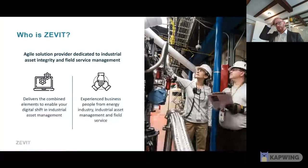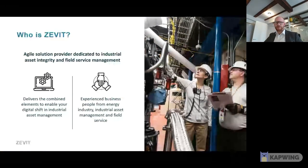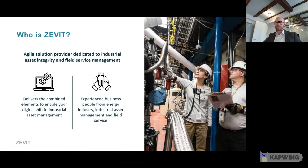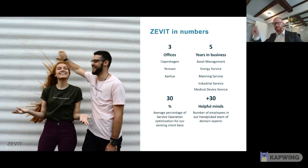Just briefly about ZEVIT: we are five years old and we step into collaboration with our partners in the industry based on all the elements needed to do a digital shift. We do enterprise-grade software solutions combined with solid industrial experience in the field of renewables and wind. We are located in Copenhagen, Denmark, and Yerevan in Armenia. We've crossed different industries, but by far energy is where we do the most, with a bit in medical devices as well. We are now 30-plus helpful minds ready to support our customers.